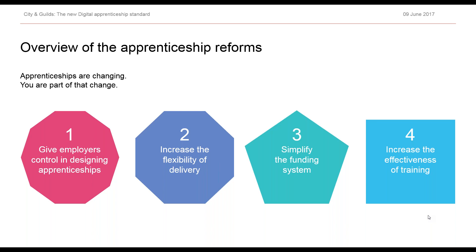The most obvious difference between the current frameworks and the new standards is that they are all employer-led. There are employer groups that have designed and developed these standards. They haven't been developed by City and Guilds, other awarding bodies, the government, or sector skills councils. They've all been developed by employers. Employers are very much in the driving seat — this is part of the government's objective to get employers involved in designing apprenticeships that they want.